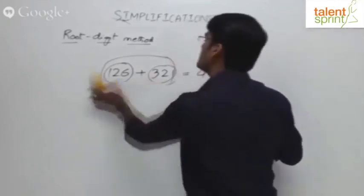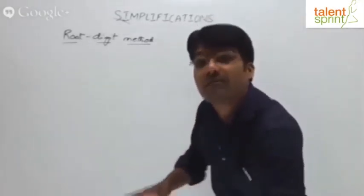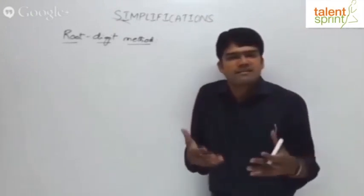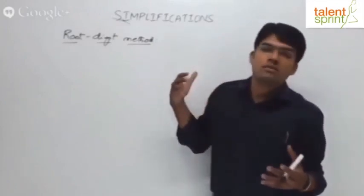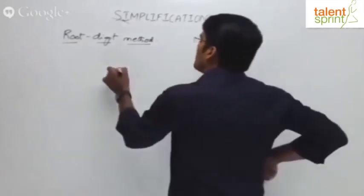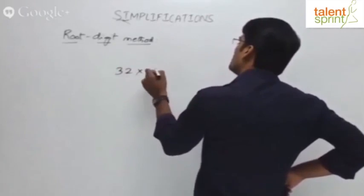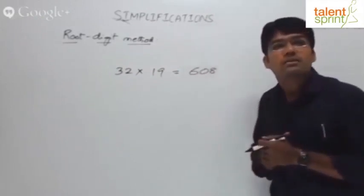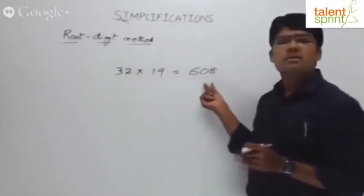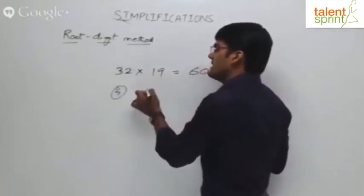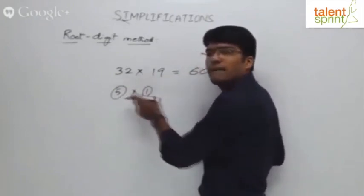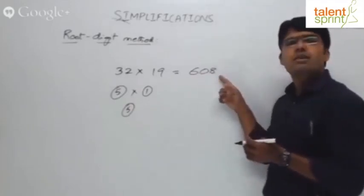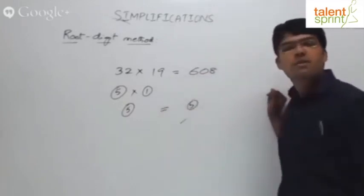The same thing applies to multiplication, addition, subtraction, and division. For multiplication: 32 into 19 equals 608. Root-digit of 32 is 5, root-digit of 19 is 1. Since it's multiplication, 5 into 1 is 5. Root-digit of the left side is 5. Check right side: 6 plus 0 is 6, plus 8 is 14, and 1 plus 4 is 5. Balanced — so the concept works.